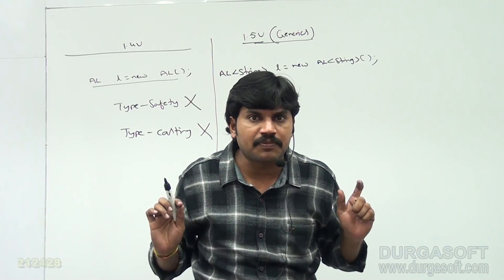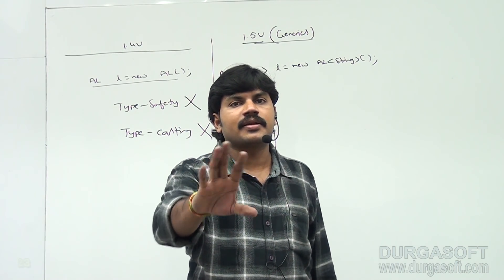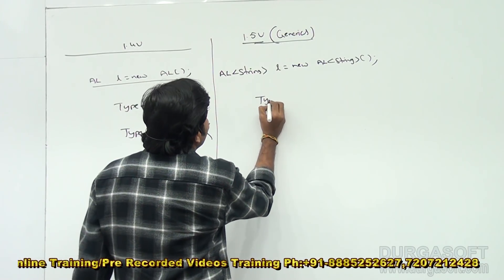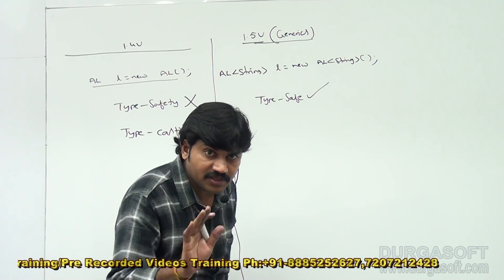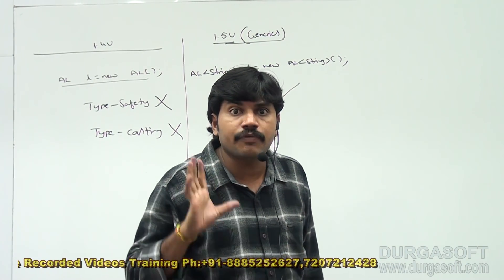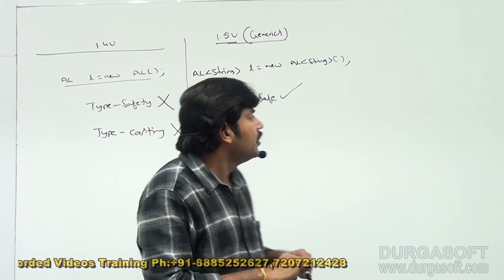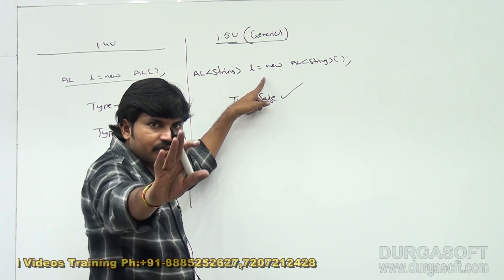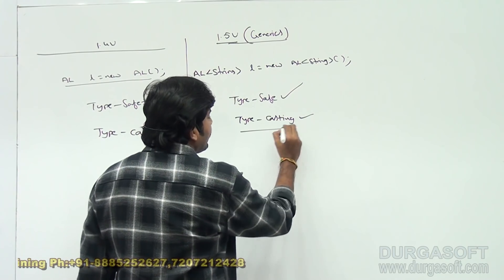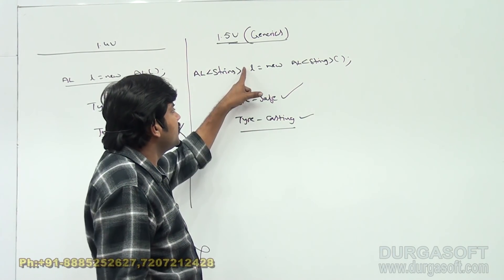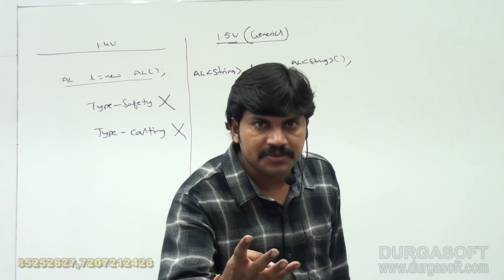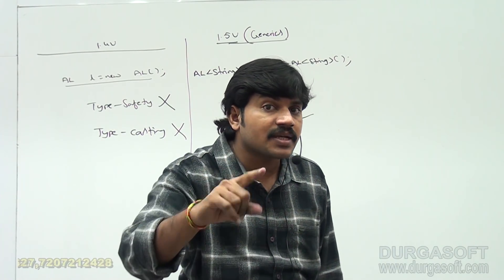The biggest advantage is that for this ArrayList, you can add only String type of objects. By mistake, if you try to add any other type, you will get a compile-time error. So type safety is achieved. At the time of retrieval, you are not required to perform type casting. The generics concept — which came in Java 1.5 — gives us type safety and resolves type casting problems.